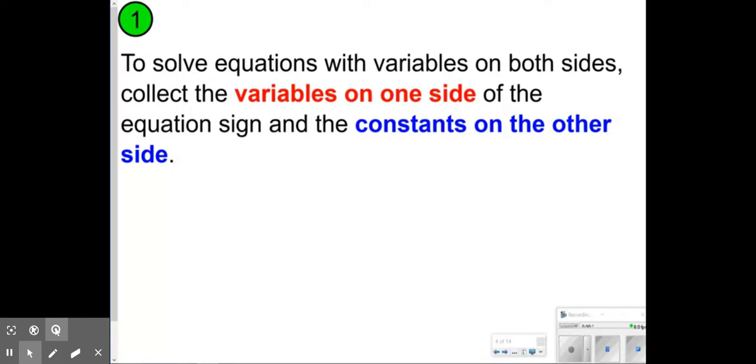An example would look like negative 3x equals 27, or 13 equals positive 2x. Notice the equation sign separates your variables and constants - that's the main goal because once you're here, you can start to solve and get your answer.